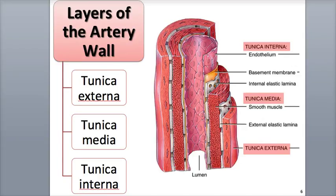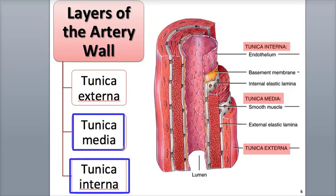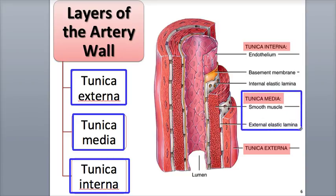An artery is any blood vessel that carries blood away from the heart. They're similar to other blood vessels in that their wall contains three layers: the inner tunica interna, the middle tunica media, and the outermost tunica externa. But they have a thicker tunica media with abundant muscle and elastic connective tissue.